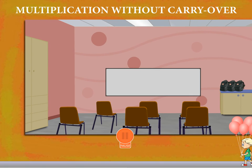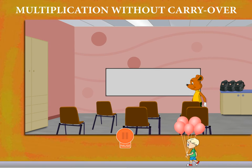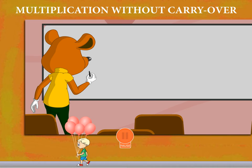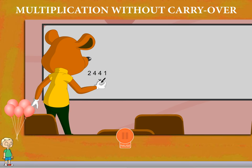Multiplication without carryover. Toby is in the class to show multiplication without carryover. He has to multiply 2441 by 2.